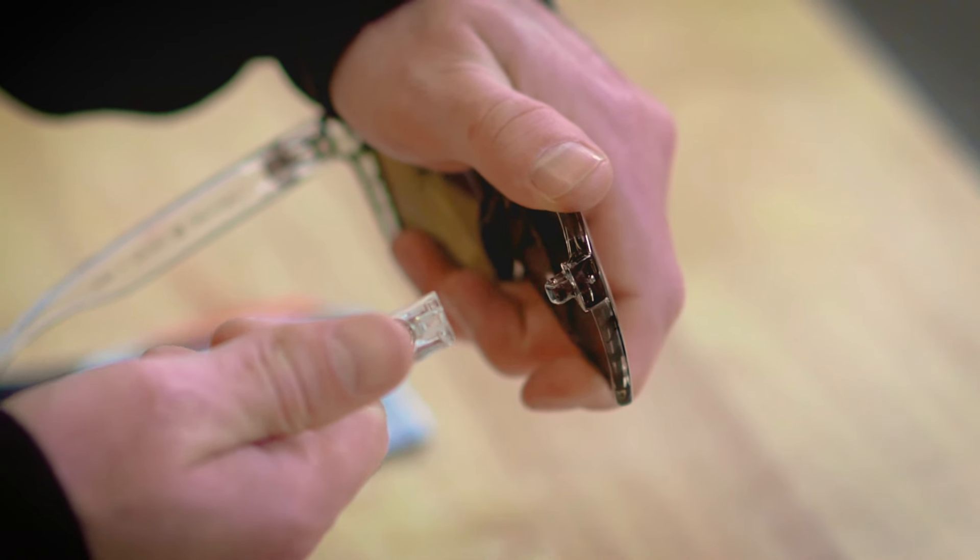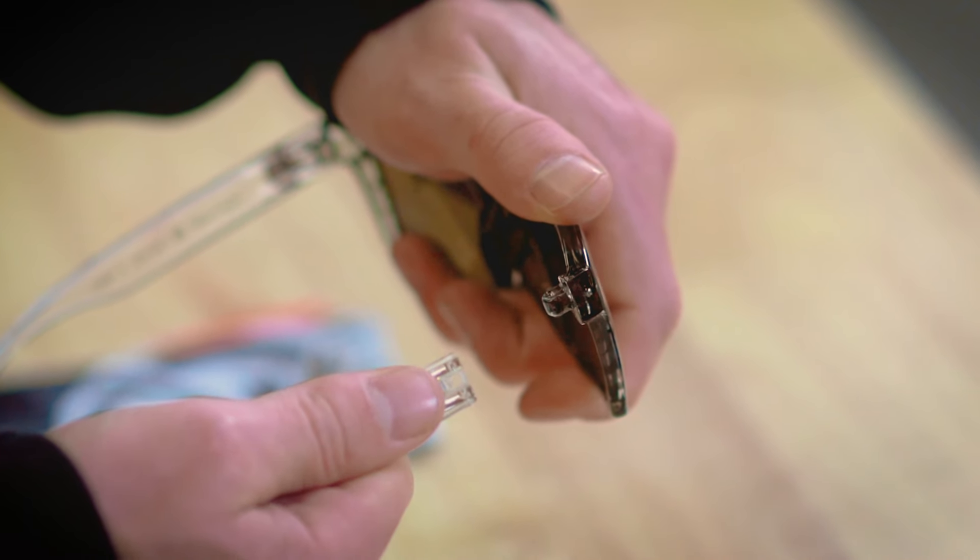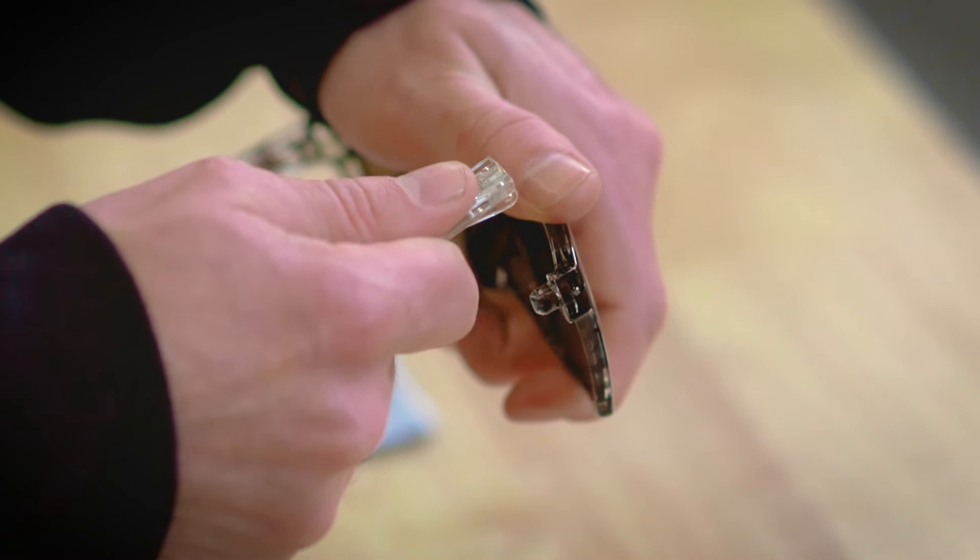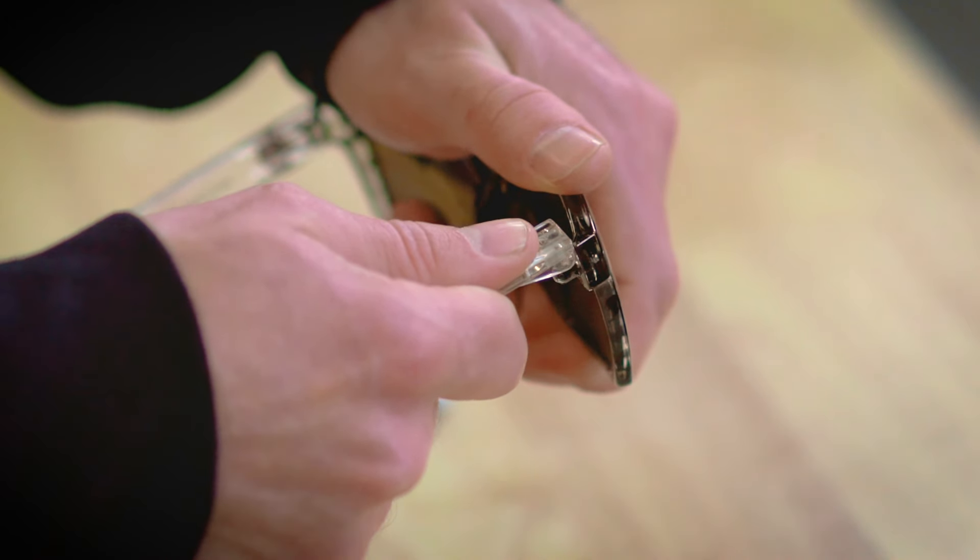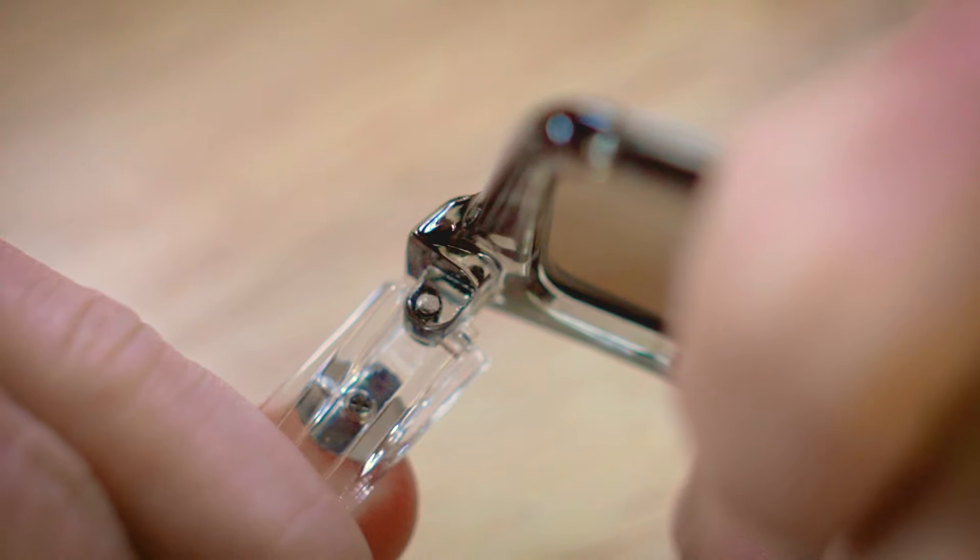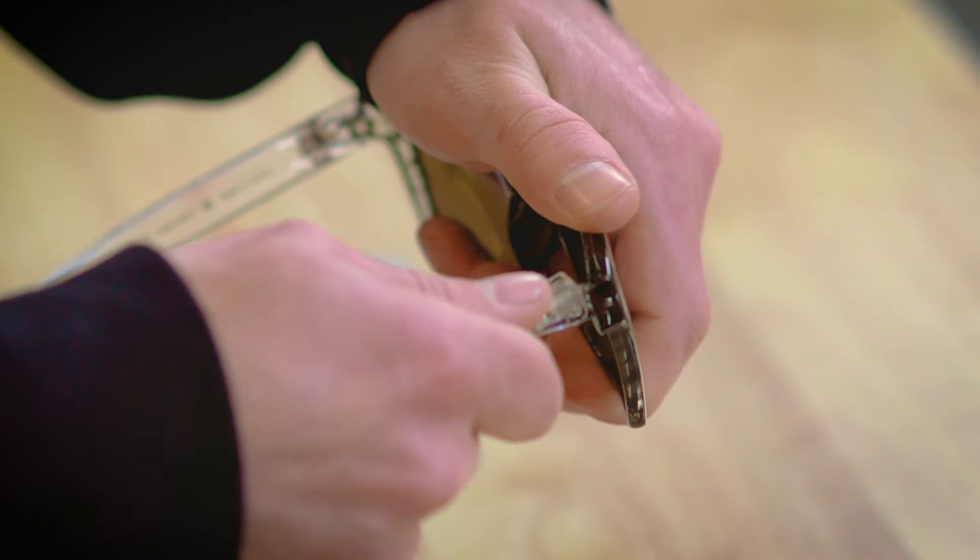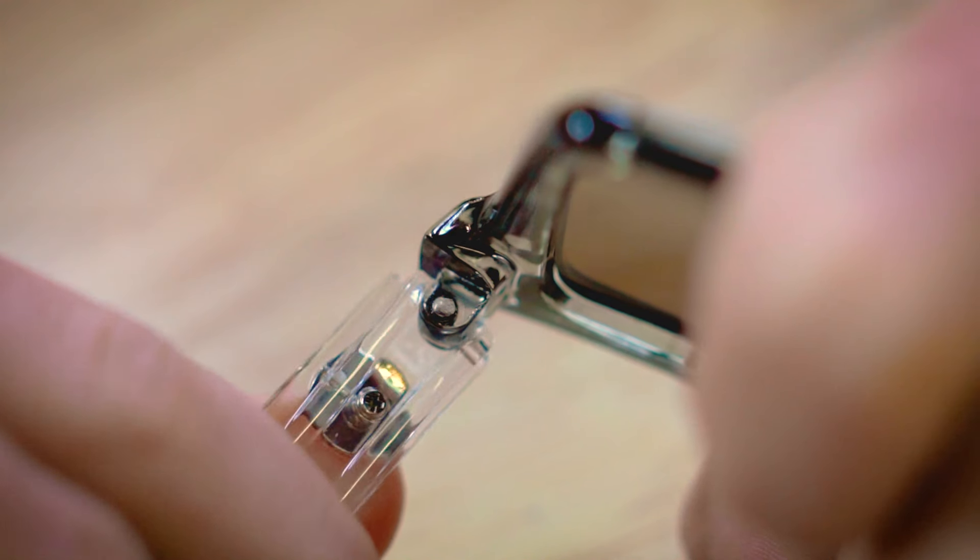Now attaching the arm back on, hold the frame in the same manner. Hold the arm with your thumb over the emblem again. Get the channels of the arm into the post of the frame and press down. Then press down and rotate the arm, and it'll pop in just like that.